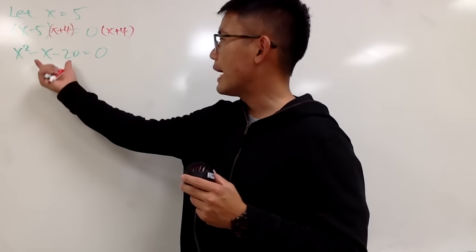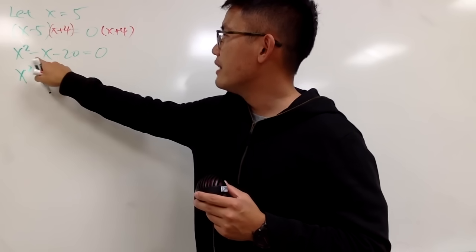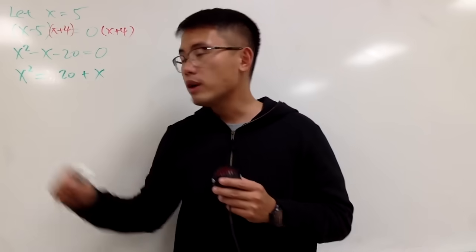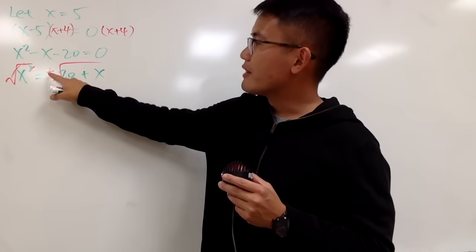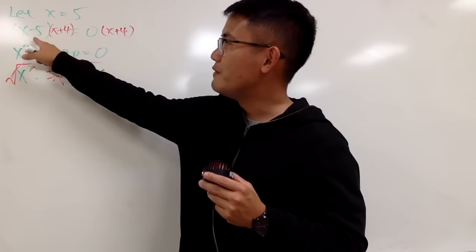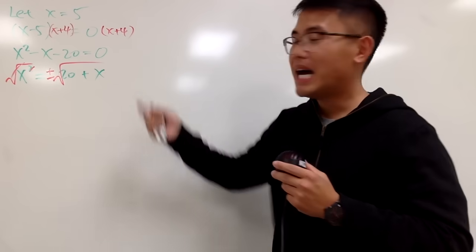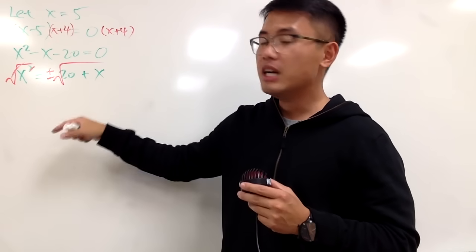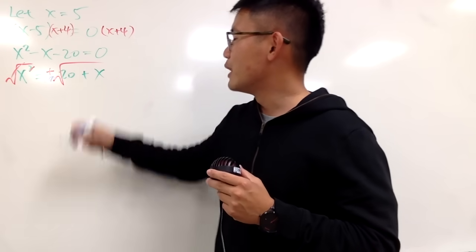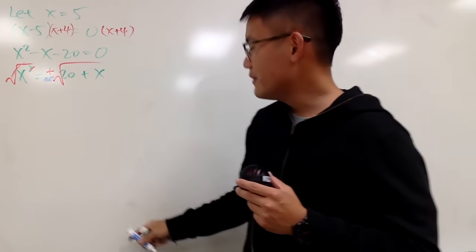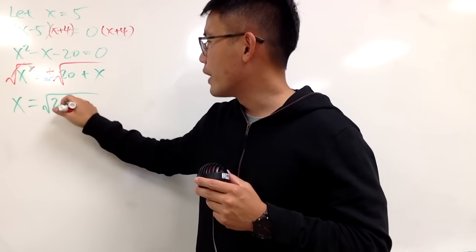I will move both terms to the right, so we have x squared equals 20 plus x. Of course, here we have a square, so I'll take the square root on both sides — and don't forget the plus or minus. We have the plus-minus because one factor gives a positive root and the other gives a negative root. I want to get to 5, so I will keep the positive square root. So x is equal to the positive square root of 20 plus x.